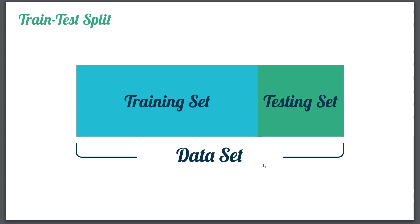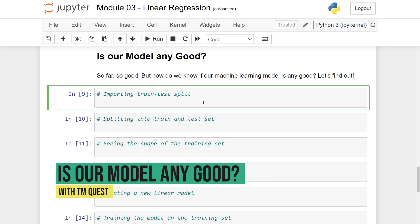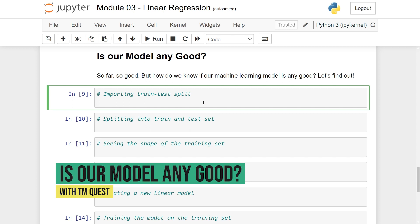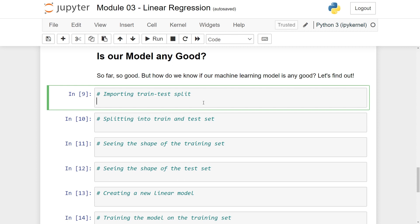To illustrate: here we have the entire dataset containing x and y values — the features and targets. We take some part of the data to train the model, and a second, potentially smaller part to test our model. Let's see how this works in practice and do some coding. The first thing we want to do is split the dataset into the training set and the testing set.